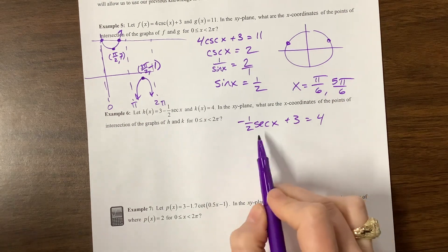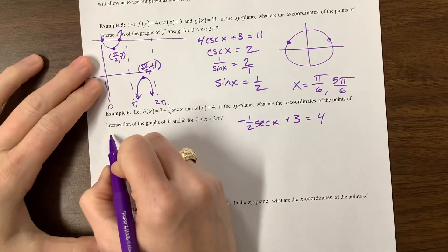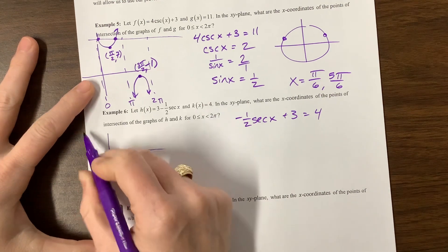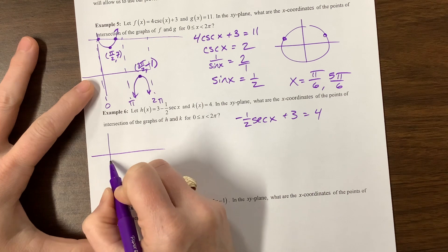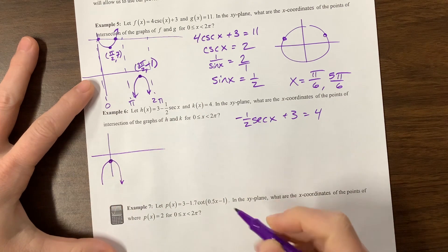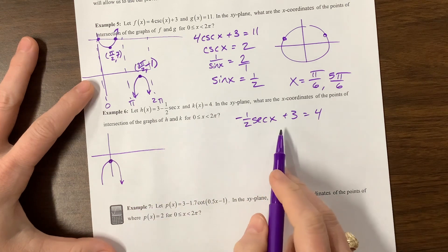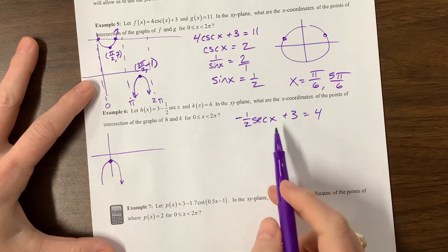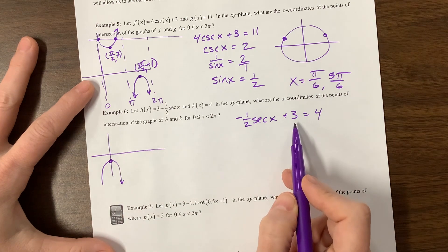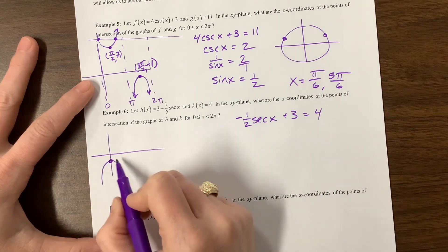So then, if I graph this side, I have my secant graph normally starts here and then opens up, but now it's going to be reflected and opened down. And this point, so it's going to do something like this, and then, oh, I lied to you. What did I do wrong? Did you catch it?